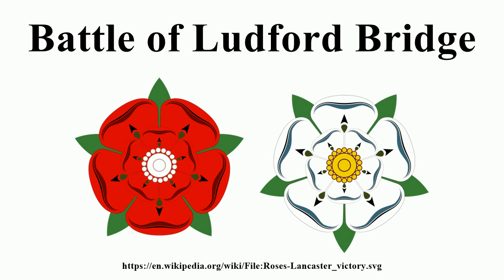Richard's forces began the campaign dispersed over the country. Richard himself was at Ludlow in the Welsh marches, Salisbury was at Middleham Castle in North Yorkshire, and Warwick was at Calais. As Salisbury and Warwick marched to join Richard, Margaret ordered a force under James Tuchet, 5th Baron Audley to intercept Salisbury. At the bloody Battle of Blore Heath, Audley's forces were routed. Even after this defeat, the forces available to Henry and Margaret outnumbered York's, Salisbury's and Warwick's combined armies by two to one.